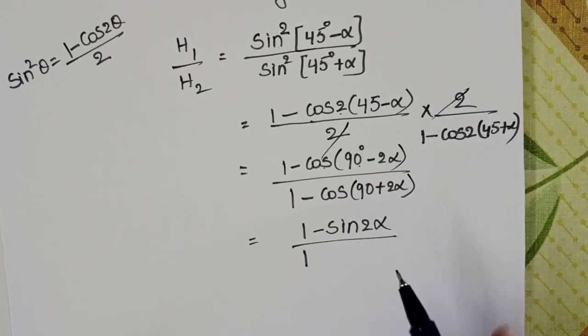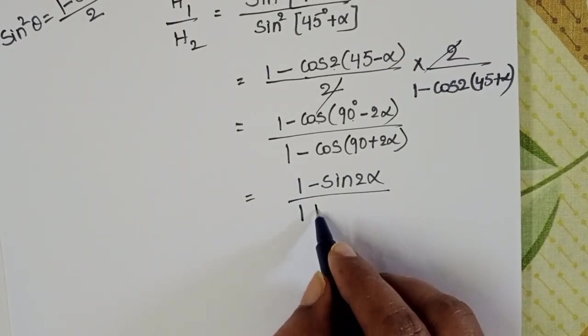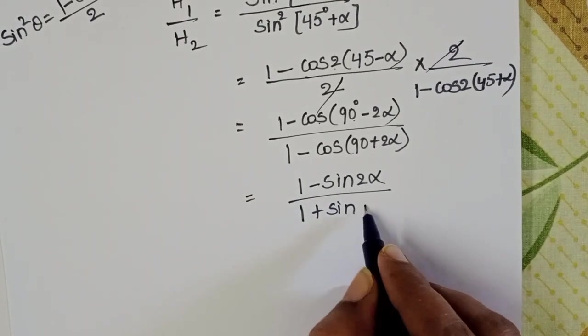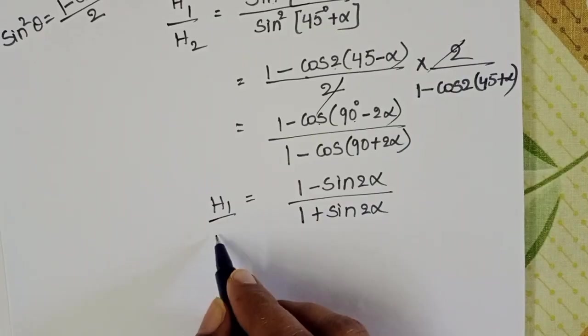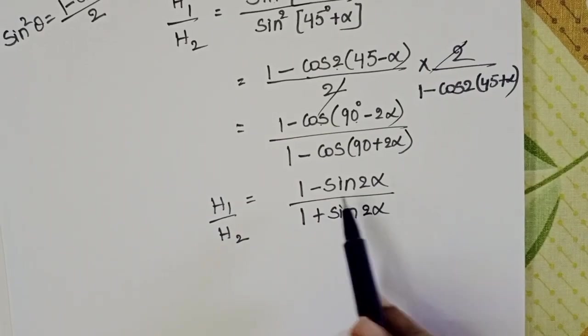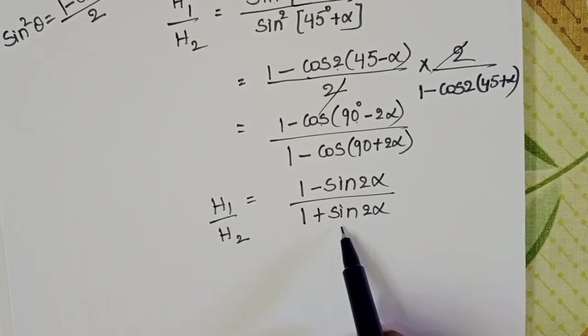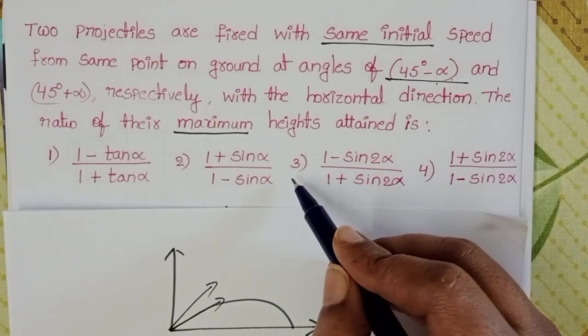So it becomes minus sin theta, minus of minus plus sin 2 alpha. The ratio of the maximum heights equals 1 minus sin 2 alpha by 1 plus sin 2 alpha. This option is correct.